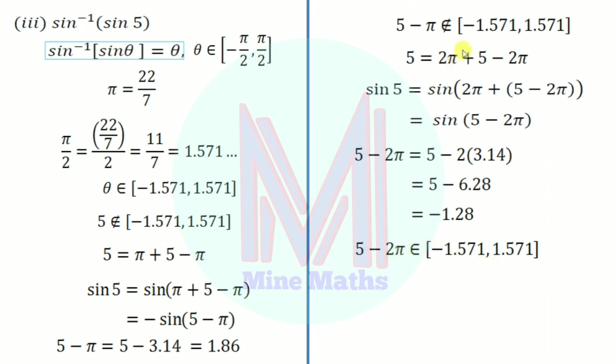Using the formula, sin inverse of sin 5 equals sin inverse of sin of 5 minus 2π, which simplifies to 5 minus 2π.